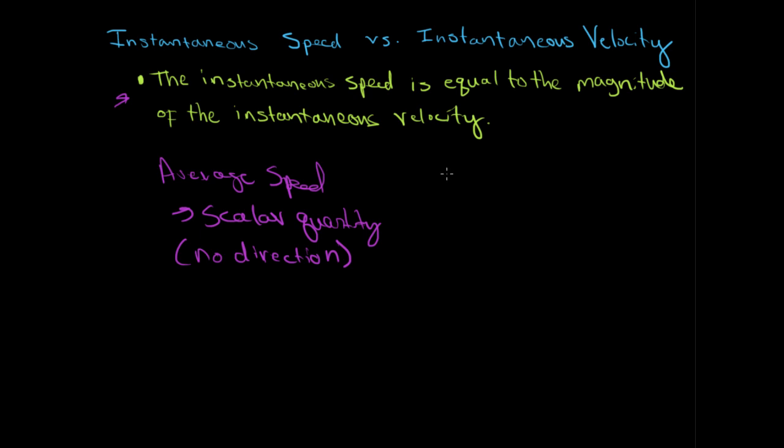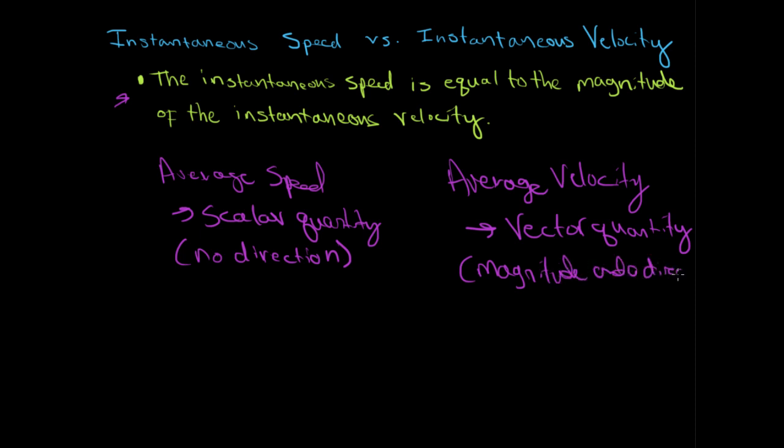Whereas average velocity, we saw, is a vector quantity. And we learned that it does specify both a magnitude and a direction.